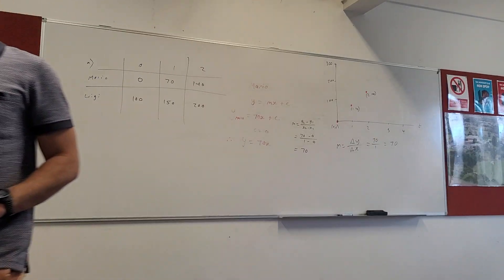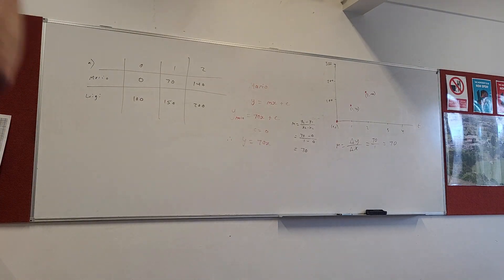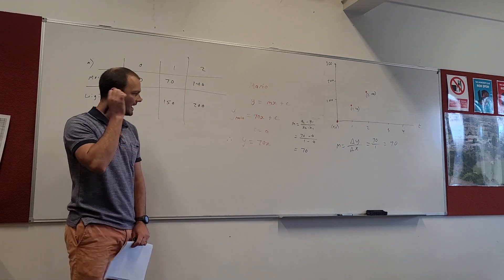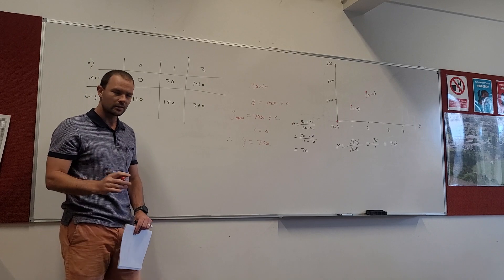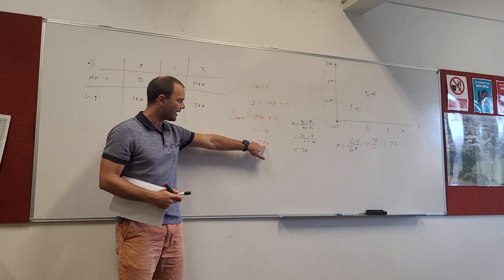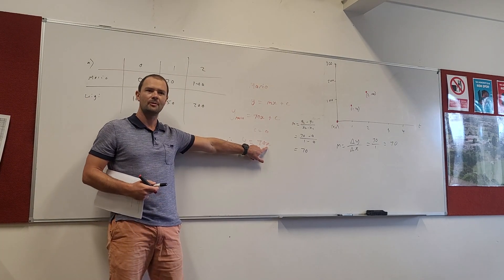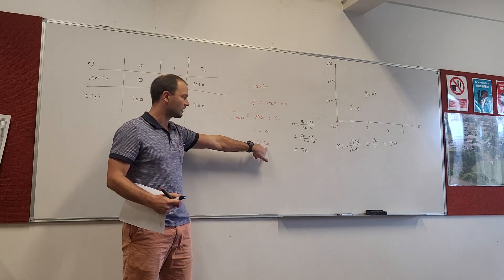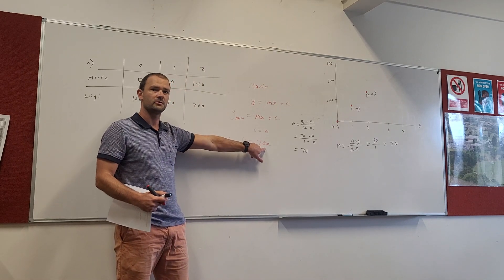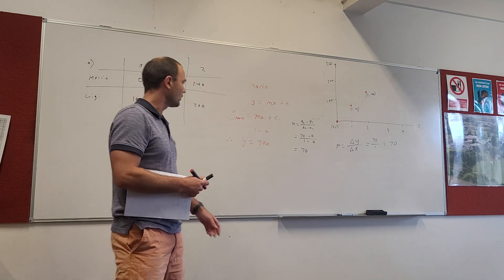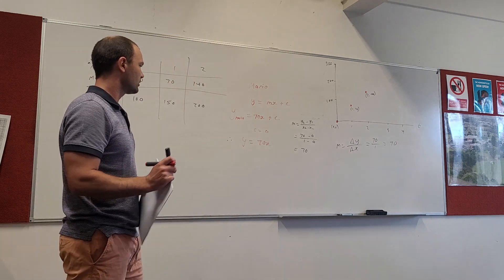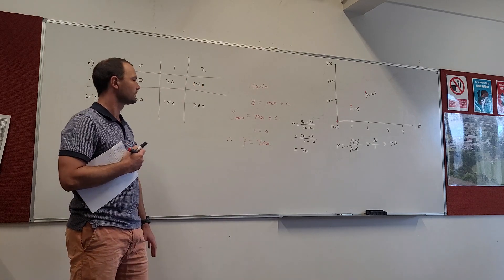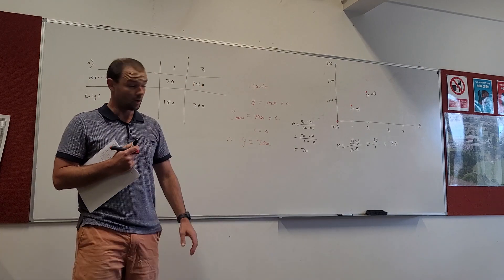And this is fantastic because this tells us the cost of Mario for any value of time. You could work out, how much does it cost to employ him for 8 hours? And you just chuck the 8 in there. 560 bucks. Alright? How much does it cost to employ him for 10 hours? 70 times 10. 700 hours. So, that's the cost of Mario. Okay, let's do Luigi.